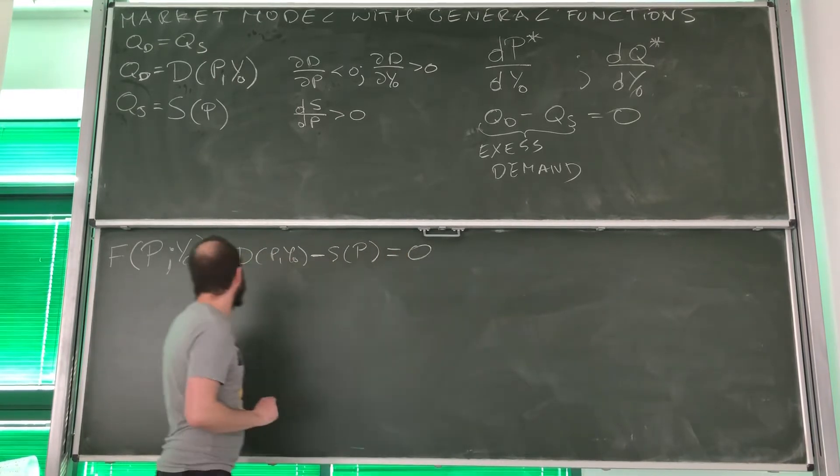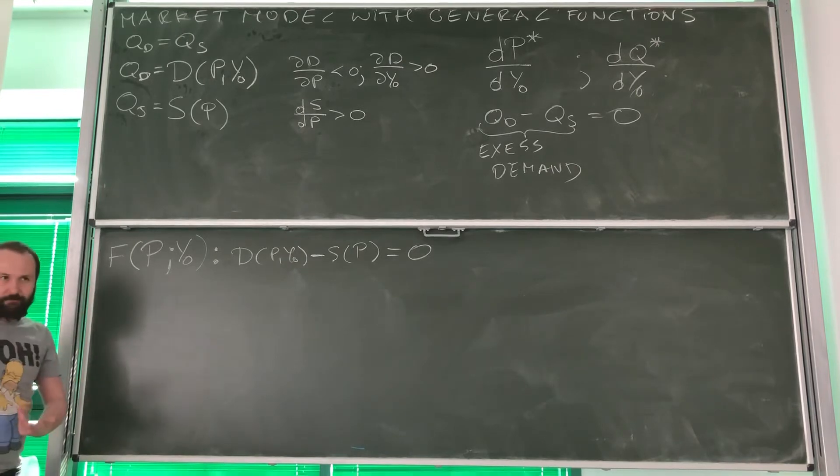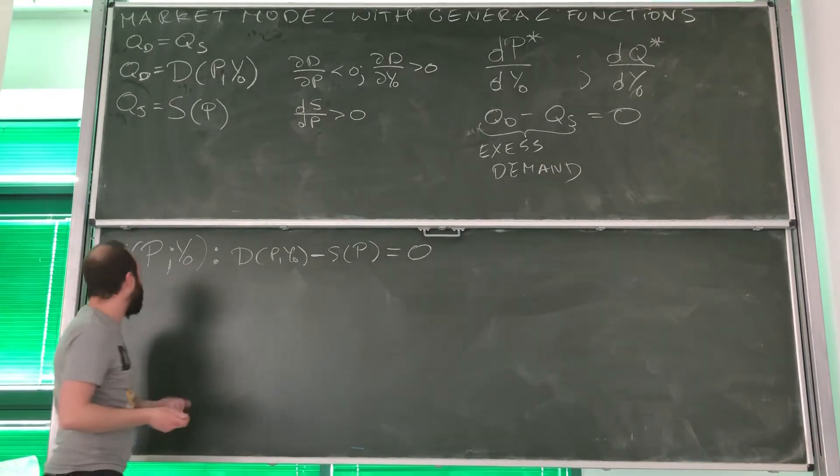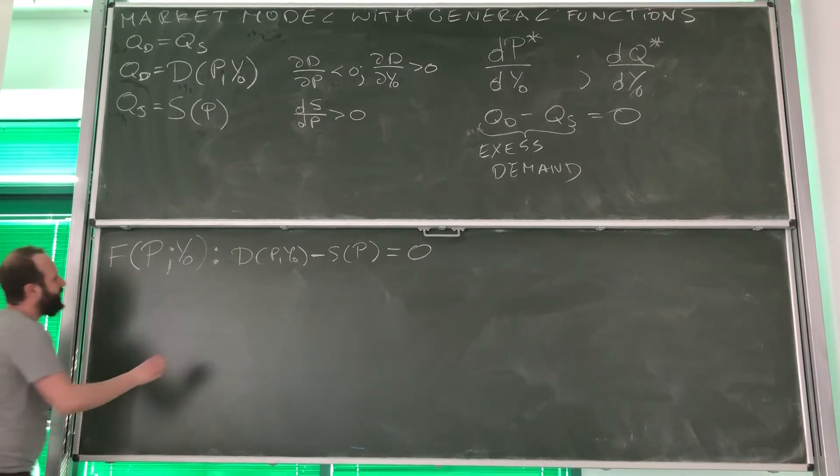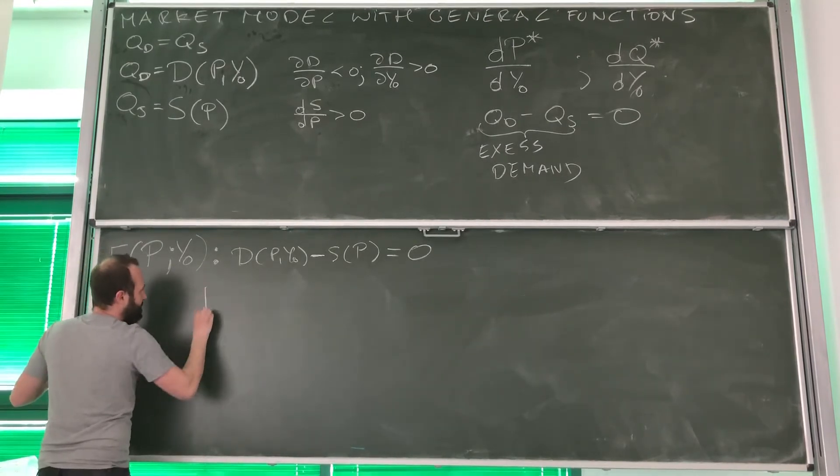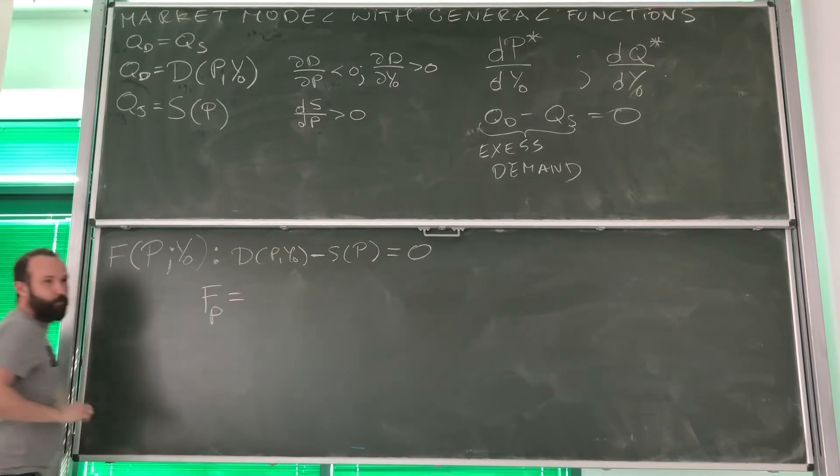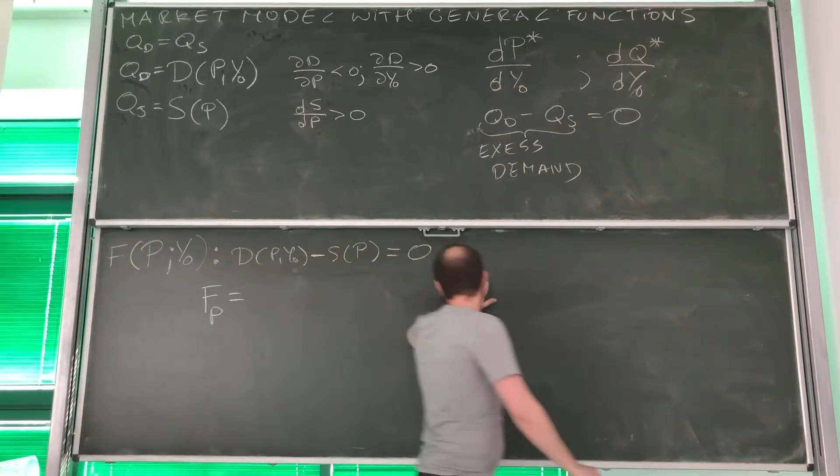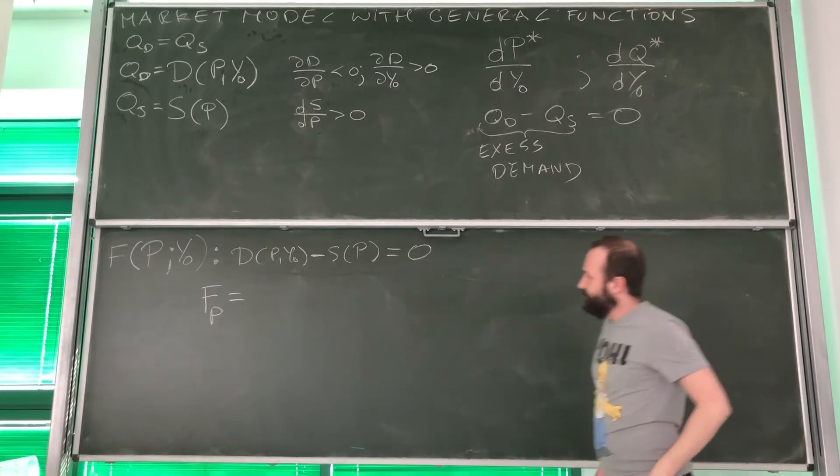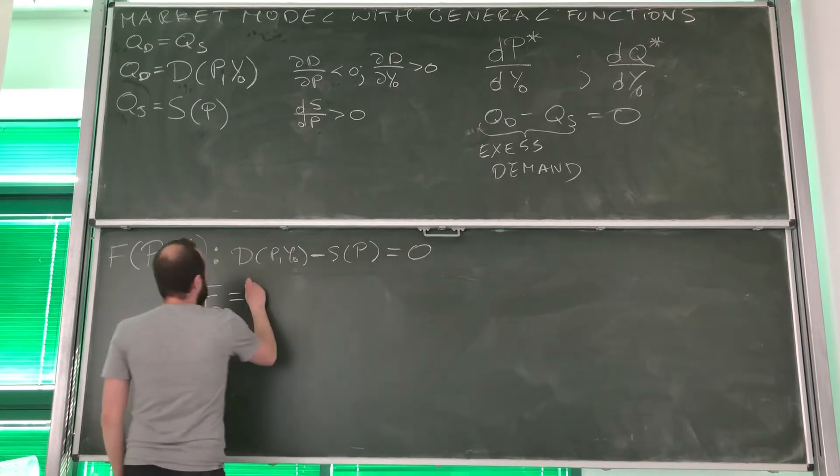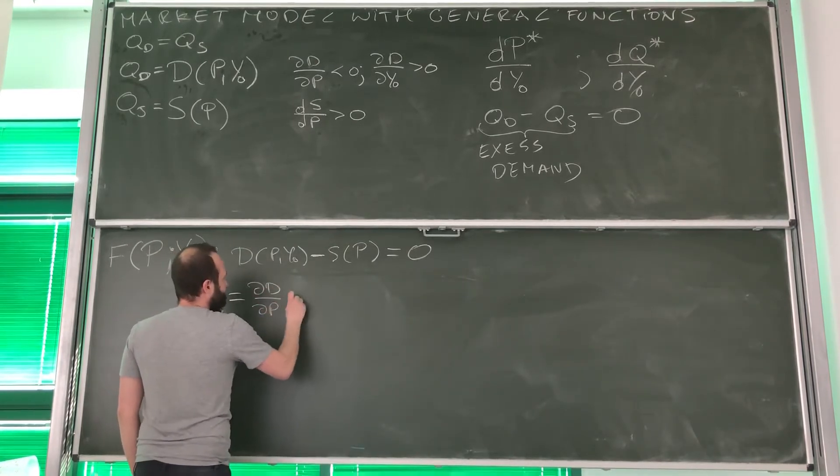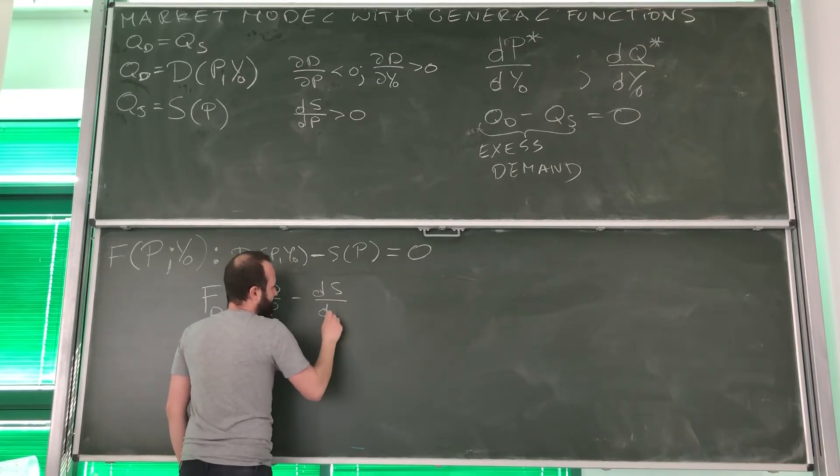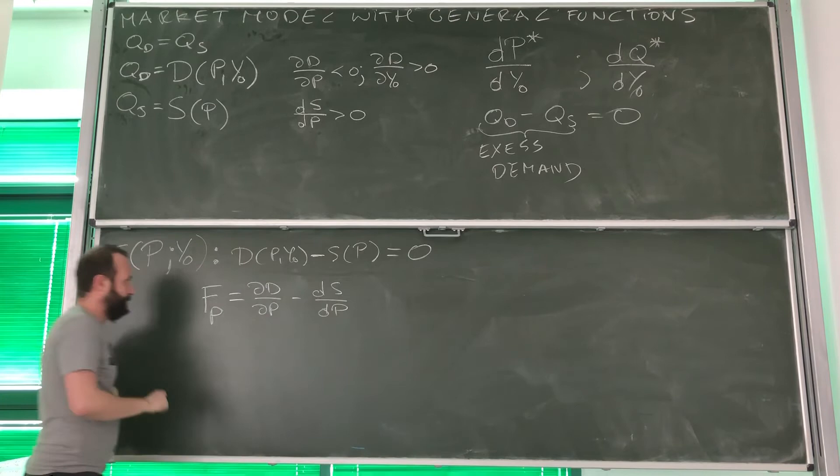What is that? Well, we need to make sure that F_Y is different than 0. What is our Y? Well, our Y is P. We need to calculate derivative of F with respect to P. So we differentiate this equation with respect to price. So what do we get? D_P minus S_P.